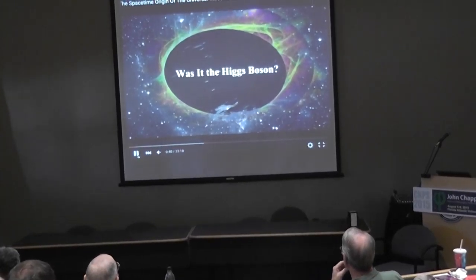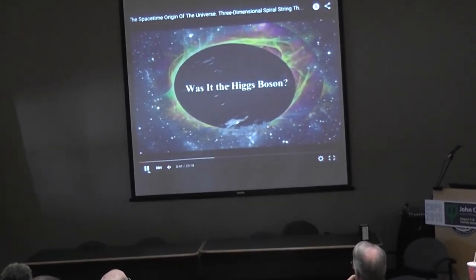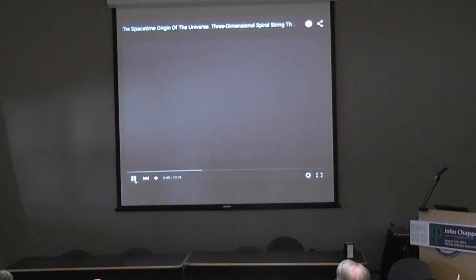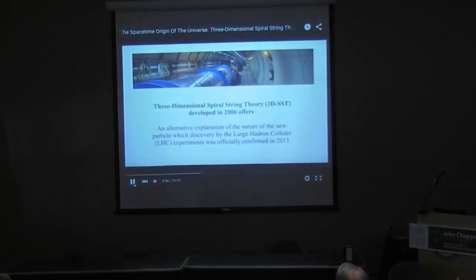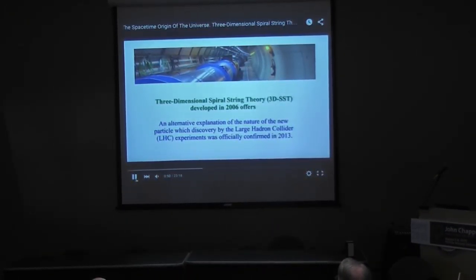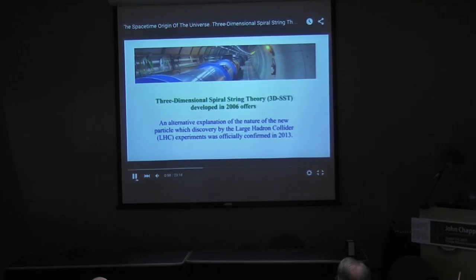Was it the Higgs boson? Three-dimensional spiral string theory, 3DSST, developed in 2006, offers an alternative explanation of the nature of a new particle which was discovered by the Large Hadron Collider experiments and officially confirmed in 2013.